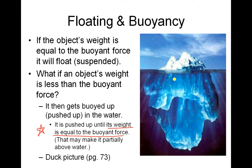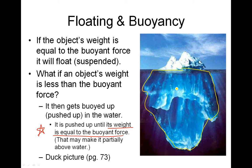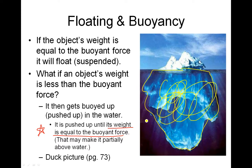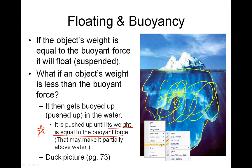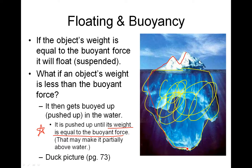Looking at an iceberg: about 10% is above water and 90% is below water. If you could weigh the water displaced by the submerged portion, would it weigh more, less, or equal to the whole iceberg? The weight of that much water weighs the same as the whole iceberg. So the iceberg is buoyed up to that equilibrium point.